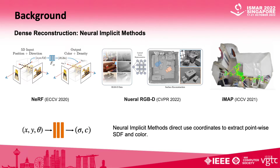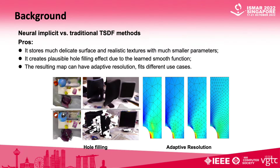Inspired by NeRF, neural implicit surfaces can obtain continuous scene attributes such as SDF and color by querying the network using position and viewing direction. Our work is inspired and constructed from these previous works. In comparison to traditional methods, one would find the benefits of neural implicit surfaces quite appealing.